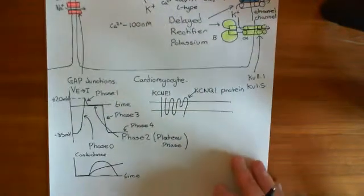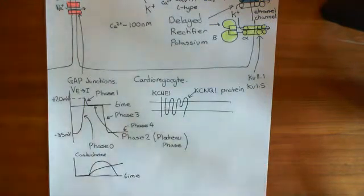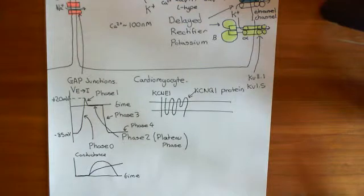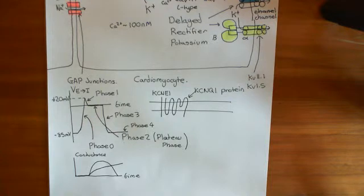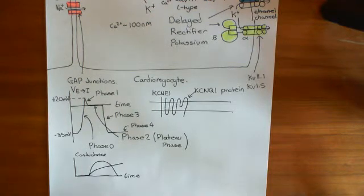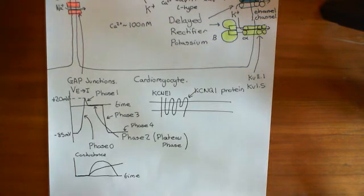So that's the cardiac action potential. In the next video, we'll look at how mutations in the delayed rectifier potassium channels can cause Long QT syndrome, and we'll discuss the complex involving the A-kinase anchoring protein 9 — YOTEO — and how mutations in that can also lead to Long QT syndrome.